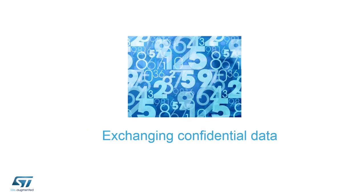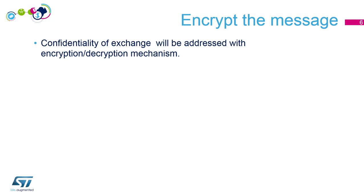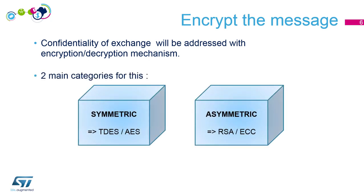The first point we want to address was confidentiality of the message. For this, we will need to encrypt the message. So encryption and decryption mechanisms will be used to address confidentiality. There are two main categories for this: symmetric and asymmetric. Here you've got the names of some algorithms, and we'll come back with details about them.